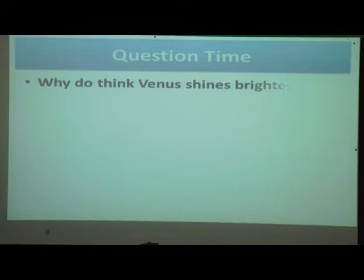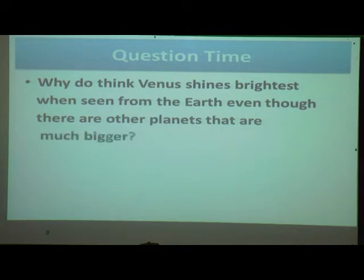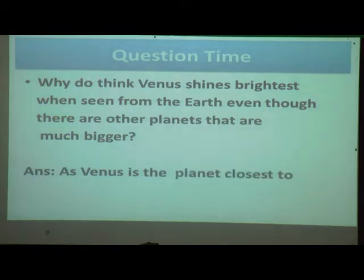The second question: why does Venus shine the brightest when seen from the earth, even though there are other planets that are much bigger? The answer is: Venus is the planet closest to the earth, and because of that we can see it most brightly.